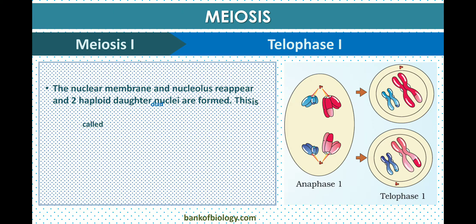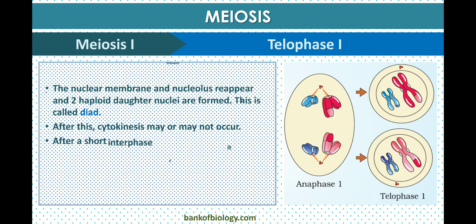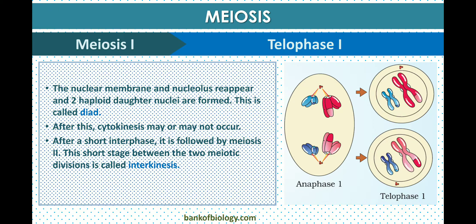In telophase one, the nuclear membrane and nucleolus reappear, and two haploid daughter cell nuclei are formed. This stage is called the dyad. After this, cytokinesis may or may not occur.